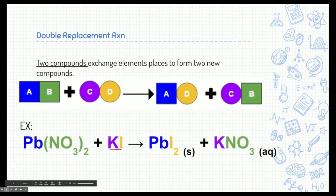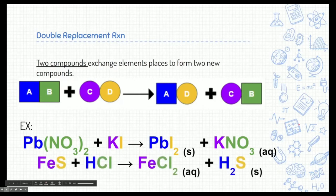So here, here's lead-to-nitrate and potassium-iodine. Lead is going to go dance with potassium. And lead is going to go dance with iodine. I'm sorry. And potassium is going to go dance with nitrate. Same thing, iron-2-sulfide and hydrochloric acid both do a double replacement reaction, each switching their elemental partners.